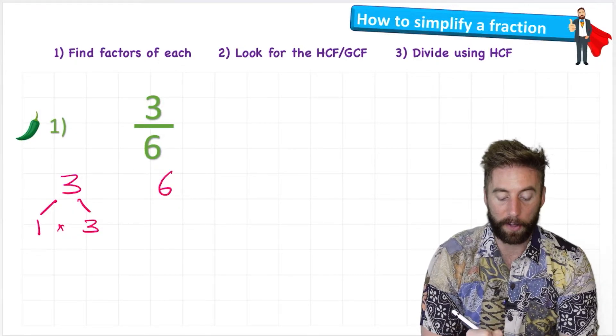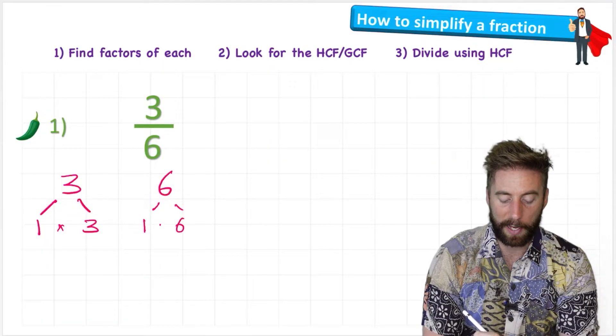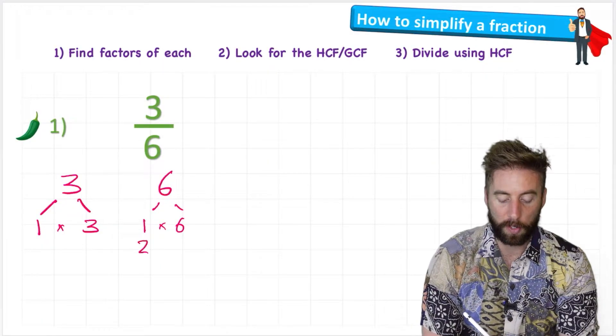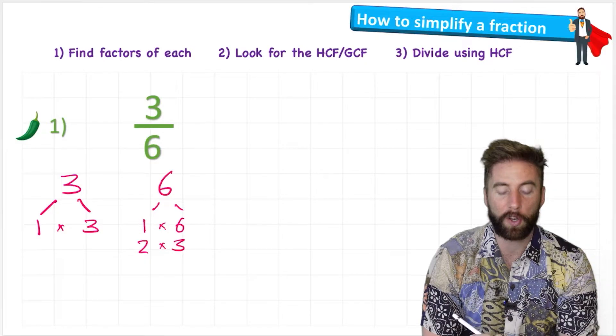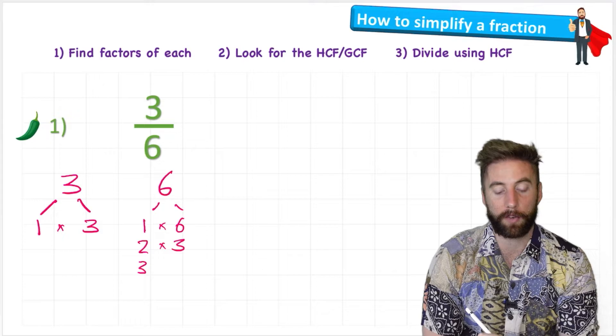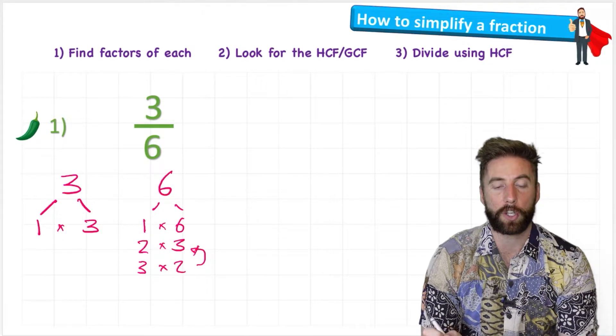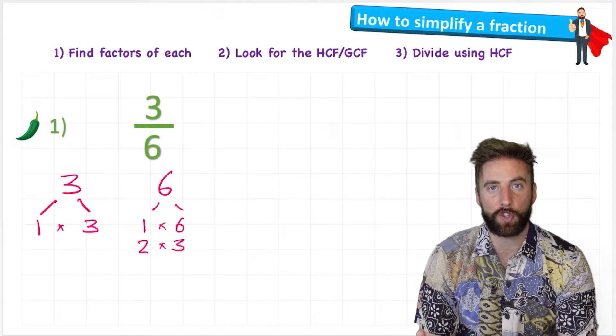Now if I look at six, I'll start with one and six again, but this time I have a two, because two times three also equals six. And if I did a third, then it would only be three times two which I already have, so I don't need to do it. Okay, so I've drawn my factor trees of each number.